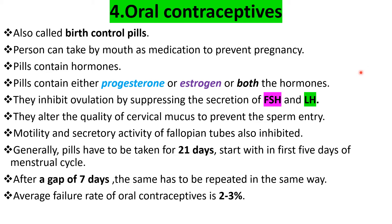How do you take the pills to avoid pregnancy? Generally the pills need to be taken for 21 days. Taking of pills must begin within the first 5 days of the menstrual cycle. After 21 days, the person must give a 7-day gap, and then if she wants to continue, again take the pills for 21 days further. The average failure rate of oral contraceptives is 2 to 3%.